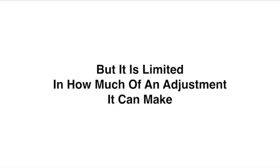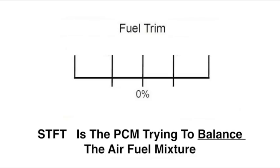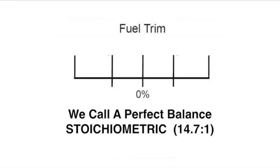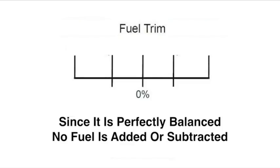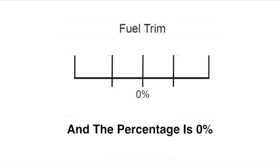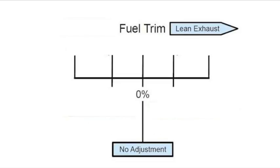Now, remember I said that short-term fuel trim recalculated with every breath of the engine. And it can do that all day long. In fact, it's supposed to, but it is limited in how much of an adjustment it can make. So, short-term fuel trim is the PCM trying to balance air-fuel mixture. We call a perfect balance stoichiometric 14.7 to 1. Since it is perfectly balanced, no fuel is added or subtracted. And the percentage is zero, right there in the middle, no adjustment.